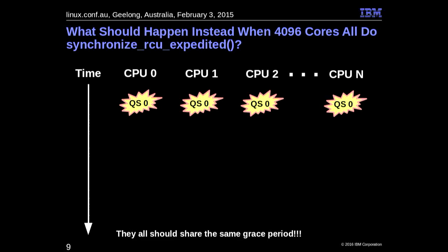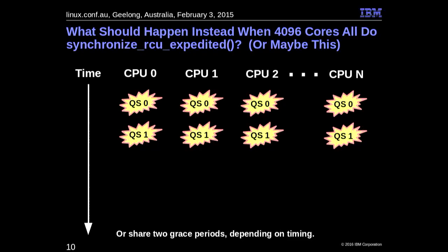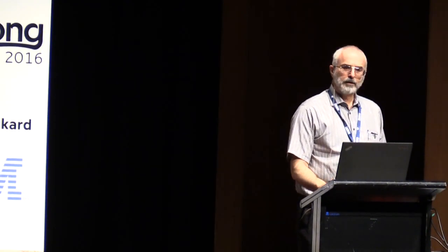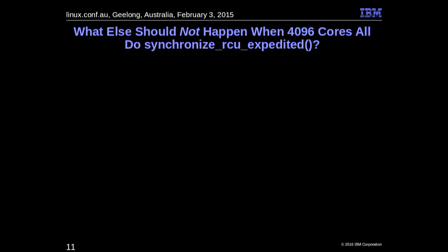We'd like all 4096 of these tasks to be serviced by one set of quiescent states — one grace period operation — and then just be done. What could happen is the first couple of CPUs come in, get the grace period started, and the rest show up too late to take advantage of it. So it's not unusual to end up with two grace periods instead. That's still much better than 4096 sets. The key thing we want is to take advantage of batching — to have one operation serve as many requesters as possible. We take the overhead divided by the number of requesters; the bigger the denominator, the happier we are.